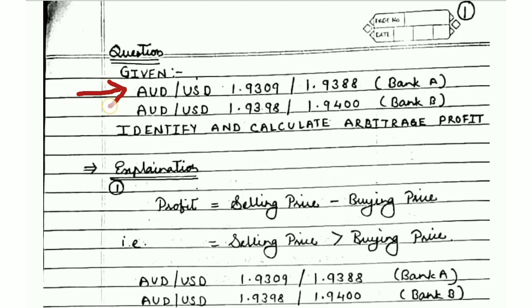The exchange rate of Australian Dollar / US Dollar: Bank A is offering a bid rate of 1.9309 and an ask rate of 1.9388. Bank B for the same currency pair is offering a bid rate of 1.9398 and an ask rate of 1.9400.